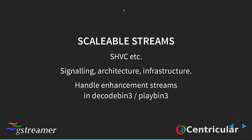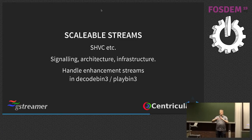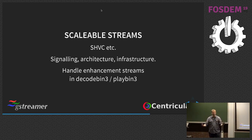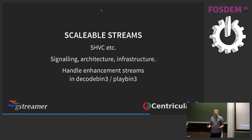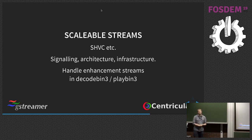Scalable streams is also a big topic. It means you have a base layer stream you can decode individually, and then enhancement streams that provide more features — for example, a base stream in Full HD and a second stream encoding only the difference to get 4K, or a stream providing high dynamic range, more colors, or higher frame rates. We're working on the signaling for that in GStreamer's architecture and infrastructure, and hopefully playbin will eventually just pick it up automatically.